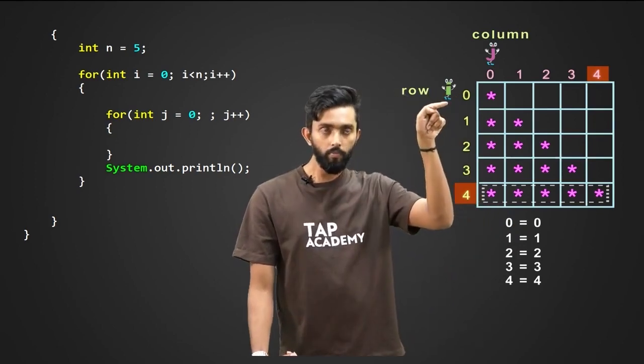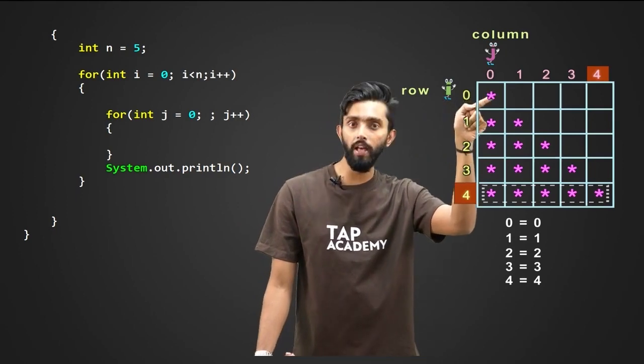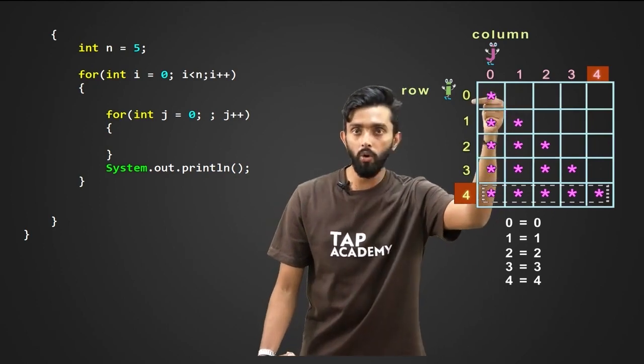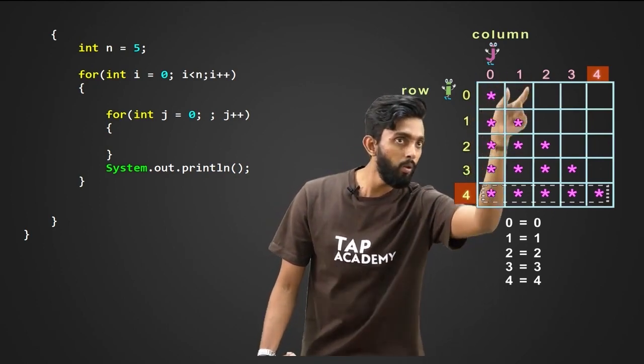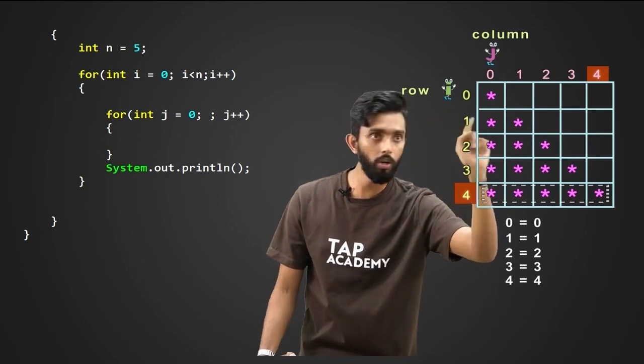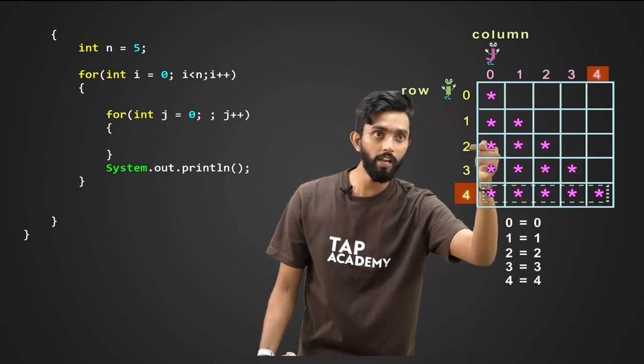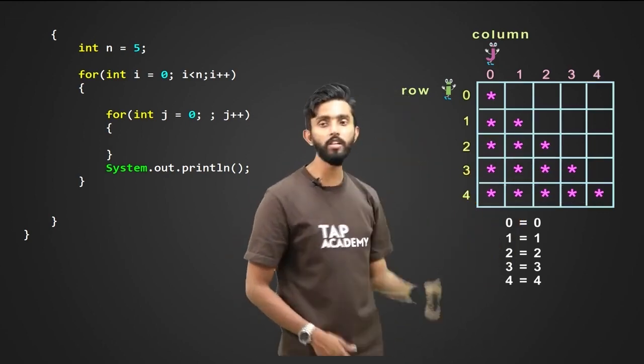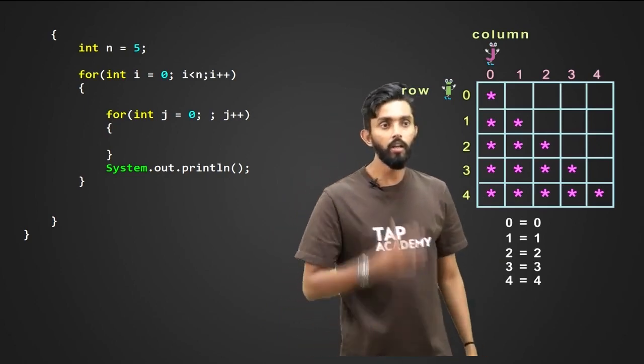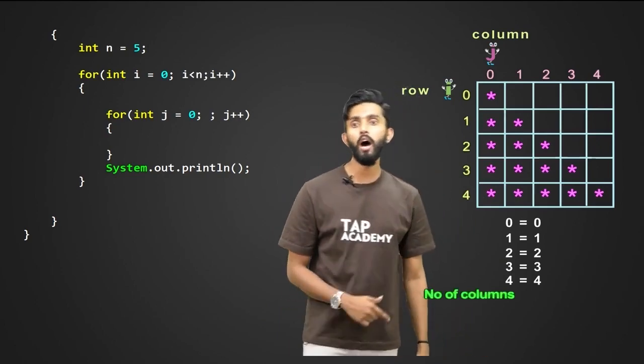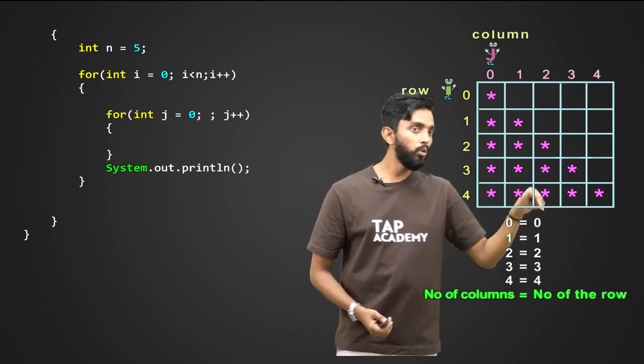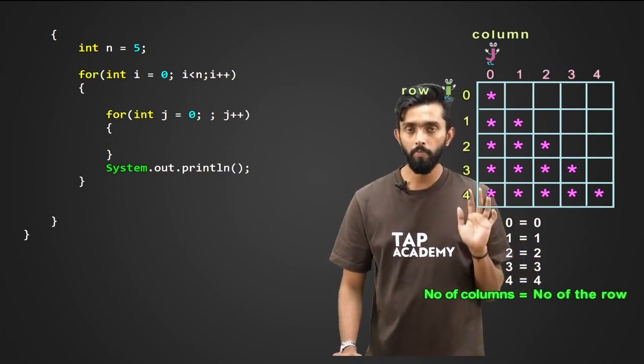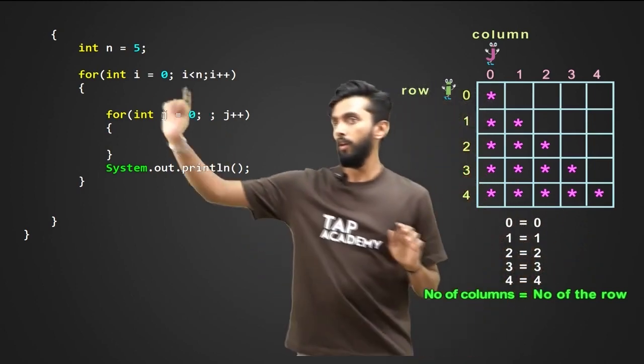Which means, in a row, how many columns or how many stars should be there is actually equal to the row number itself. If row number is zero, zero columns. If row number is one, one till one. When I say one, you must understand I am talking about two columns. Two, if it is the second row, that many columns. Third row, that many columns. Fourth row, that many columns. In conclusion, what I am trying to say is that the number of stars or number of columns is equal to the number of the row. Row is i, column is j. So what does this mean? Let us look at this.